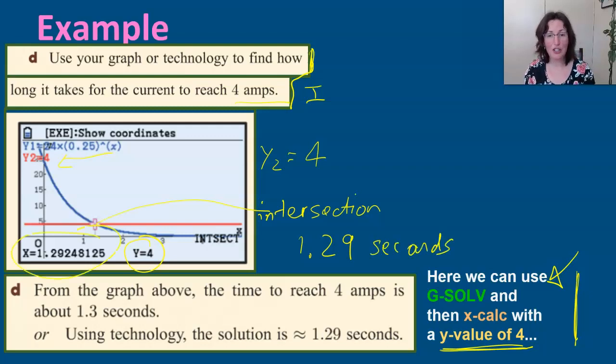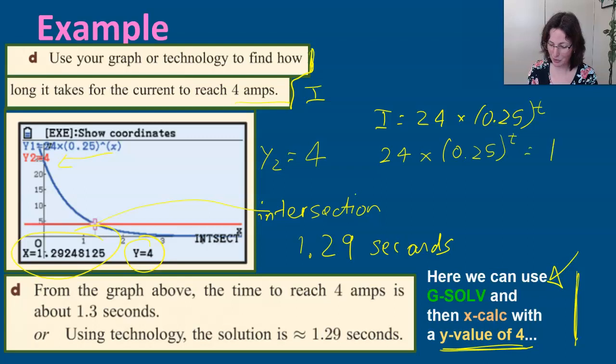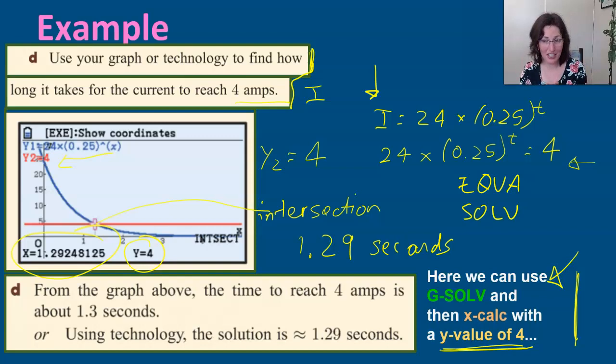But what about algebraically? You go back to the formula, which was I = 24 × 0.25^t, and we want 4 for I. So we can write 0.25^t = 4/24. To solve that you would need to go into your equation menu and solver. We worked through that in a previous video, and making sure you put your equal sign in, and then it would solve it for you. So there are multiple ways of solving a question like that. You might like to do it in a couple of ways to double check that you're getting the same answer.